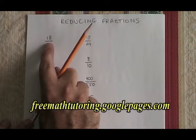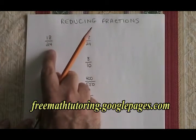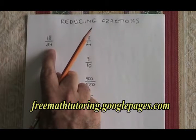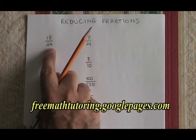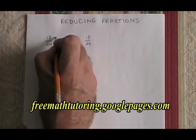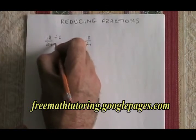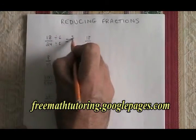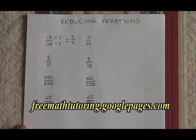Well, the factors of 18 include 6, and so do the factors of 24. 6 is the greatest common factor of 18 and 24. So if we divide both of them by 6, we end up with 3 over 4, and our fraction is reduced.